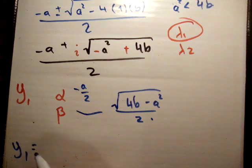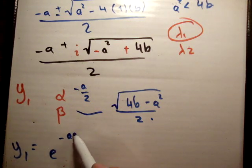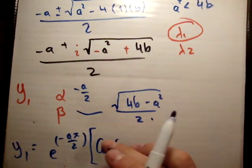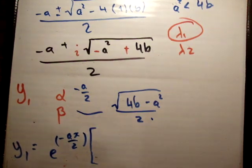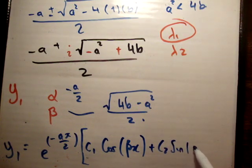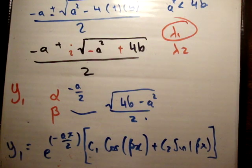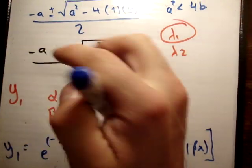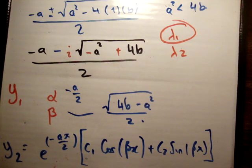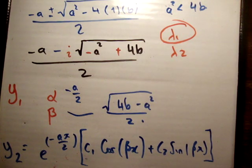Applying this, y1 equals e^(negative a·x / 2) times (c1·cos(beta·x) + c2·sin(beta·x)). That is the particular solution y1. If you take the negative sign in the ± you get the particular solution y2, and then the general solution is obtained by adding the two particular solutions together.